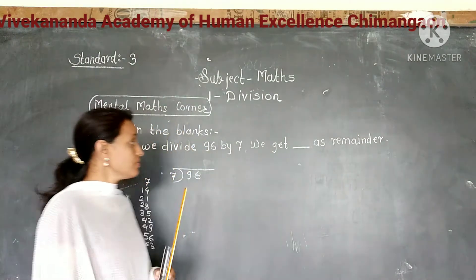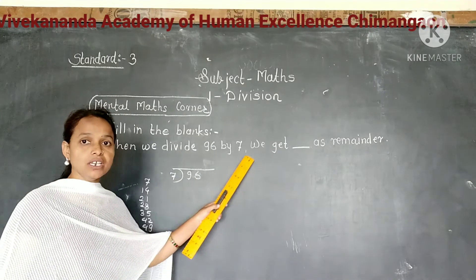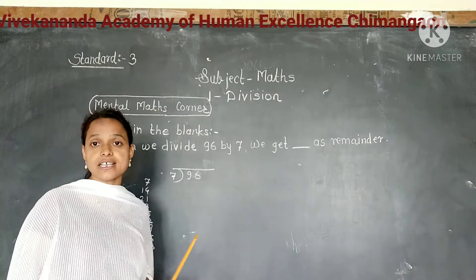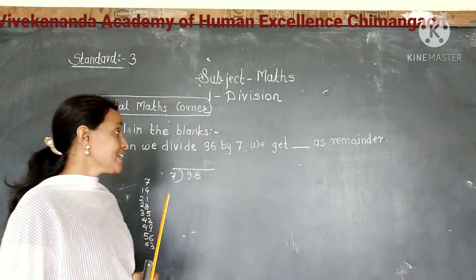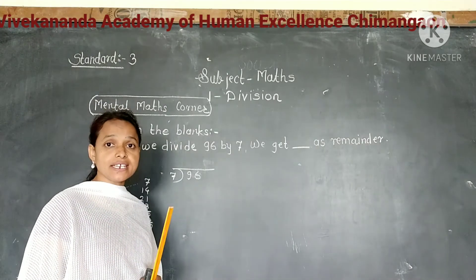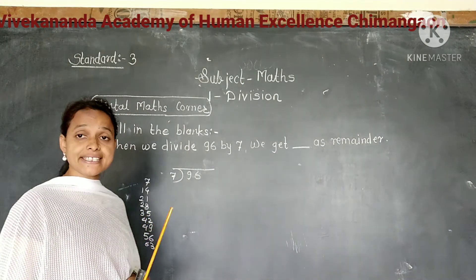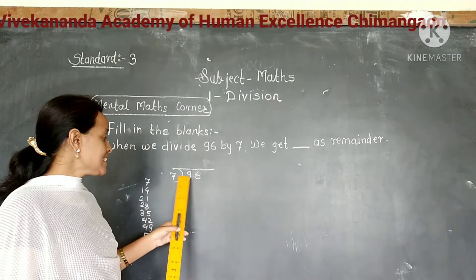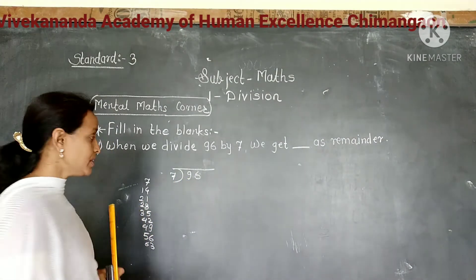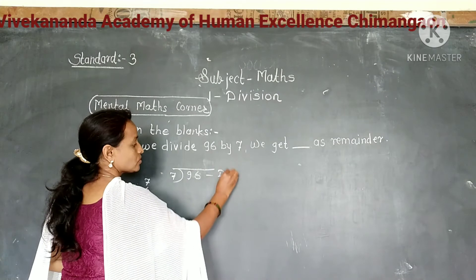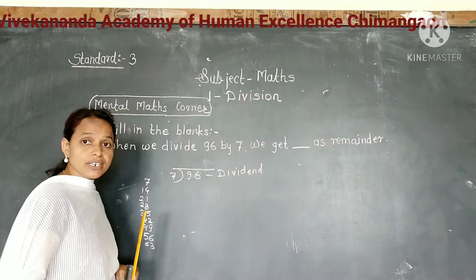First: when we divide 96 by 7, we get that dash as a remainder. So here we have to divide 96 by 7. We write 96 and 7 in the correct places. Here 96 is the dividend and 7 is the divisor.